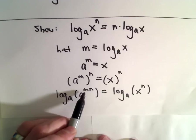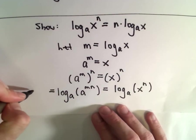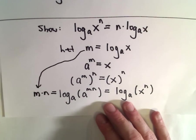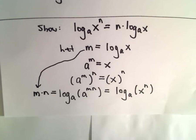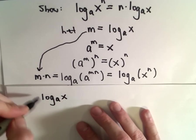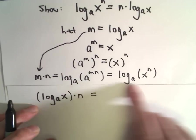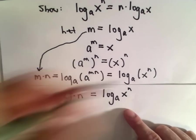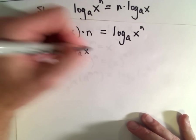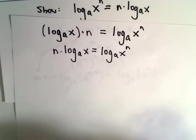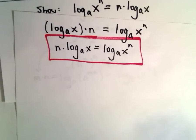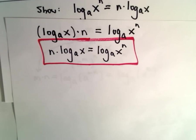On the left side, log base a of a raised to the m times n, by the cancellation property, we're simply left with m times n. Now substituting back our relabeling — m is the same thing as log base a of x — and putting n out front, we get n times log base a of x equals log base a of x raised to the power of n. We've now justified the power property using relabeling, exponents, logarithms, and the cancellation property.